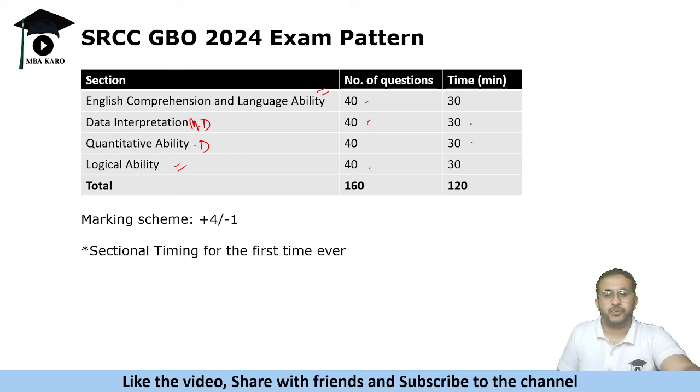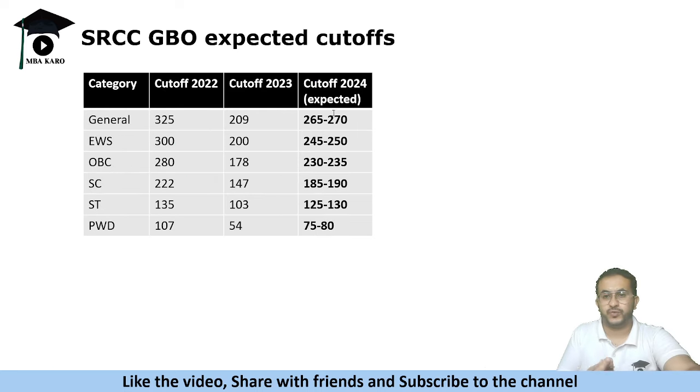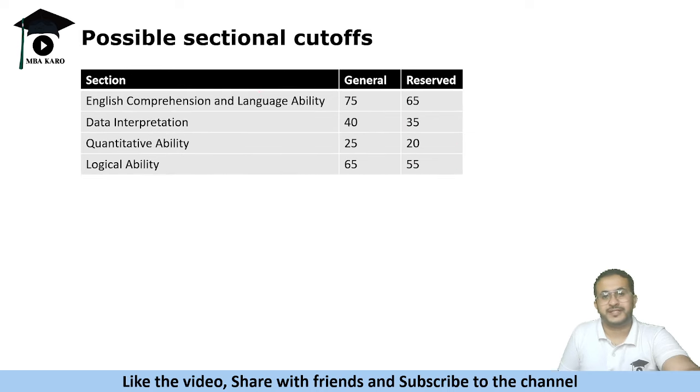So what could be the possible sectional cutoffs? These are my predictions based on the scores that have been stated by different students. Depending on the difficulty level of the paper, this was somewhere between these two papers. Also people had more time to attempt particular questions. These could be the expected cutoffs. Now again they could vary.